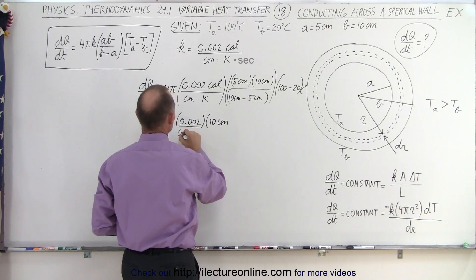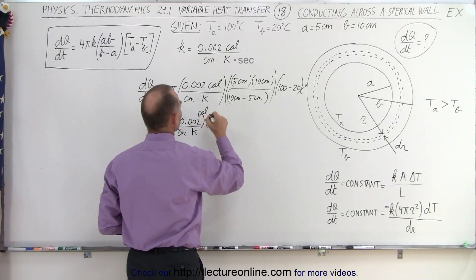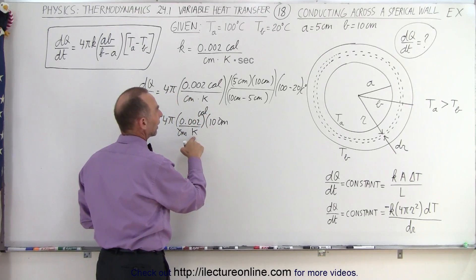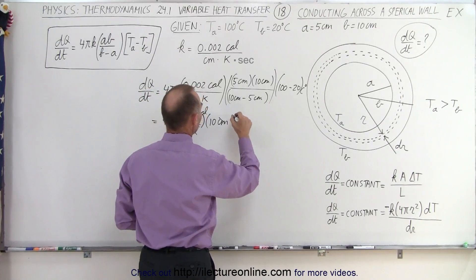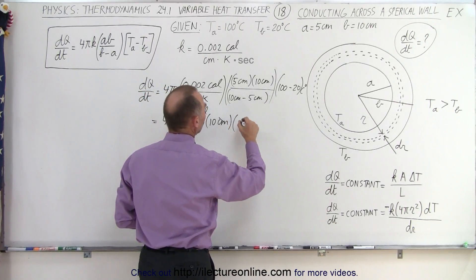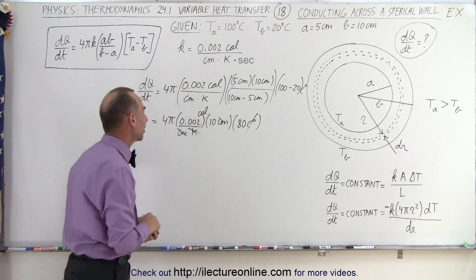And then here we have centimeters, that cancels out. We have Kelvin and we have calories. So I didn't put in the calories, so we'll put calories and Kelvin here. And let's see what else we have. Here we have 100 minus 20 which is 80 centigrade degrees. So the centigrade degrees and Kelvins cancel out as well.